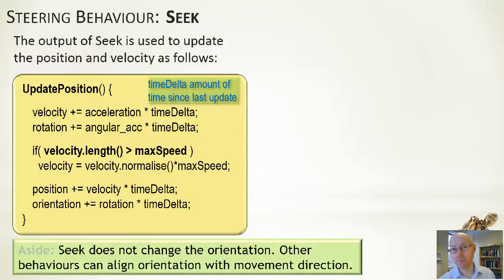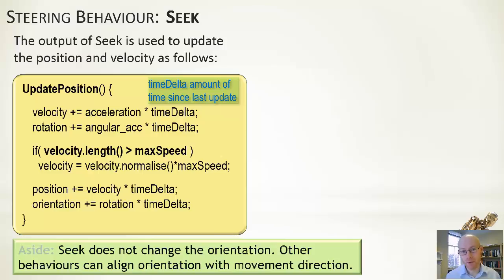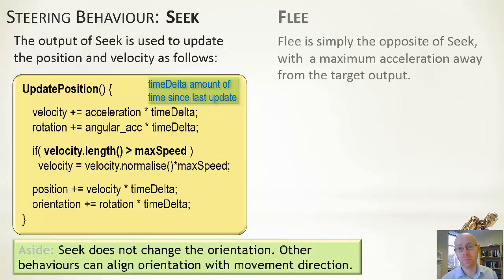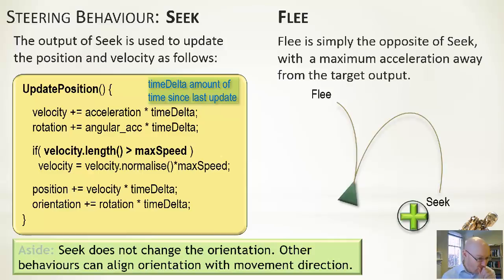Seek is concerned only with change in velocity and position — it doesn't change orientation. If you want to seek towards a target but face in the direction you're traveling, you'd combine two steering behaviors: a seek one and an align or 'look where you're going' one. Flee is simply the opposite of seek — you accelerate away from the target as fast as you possibly can.